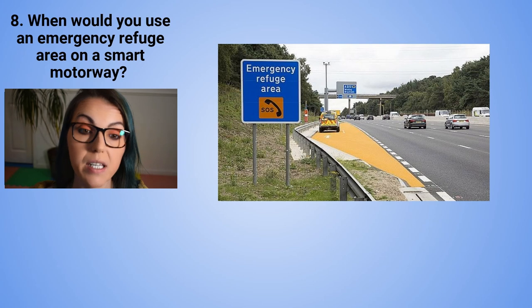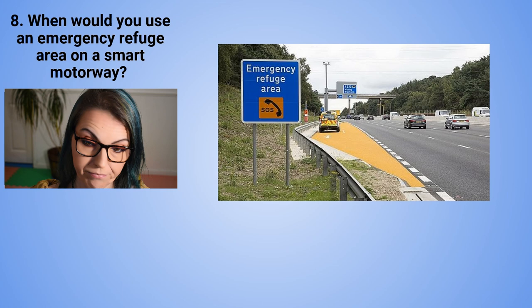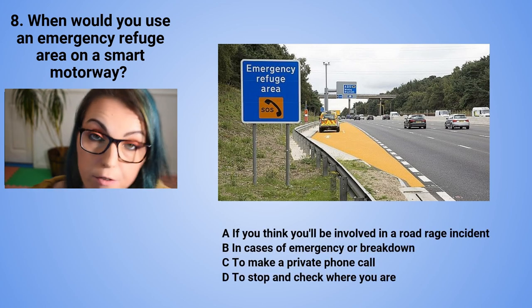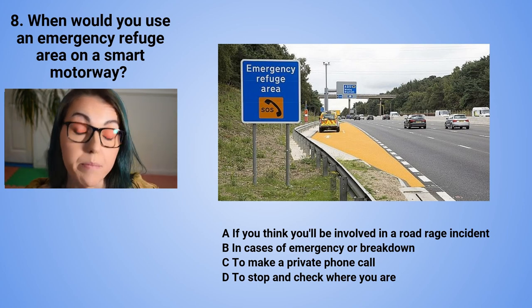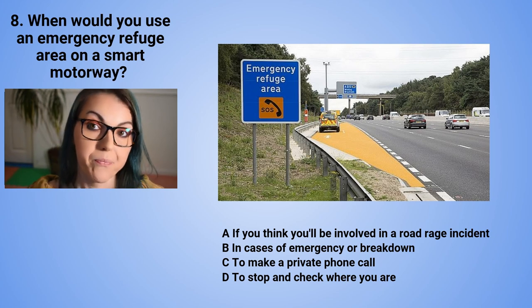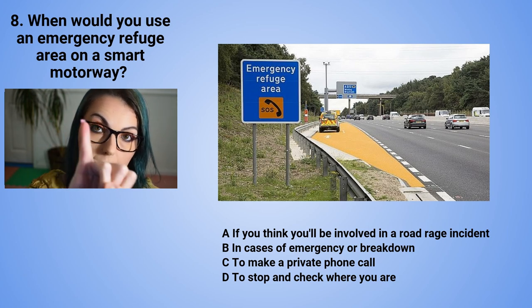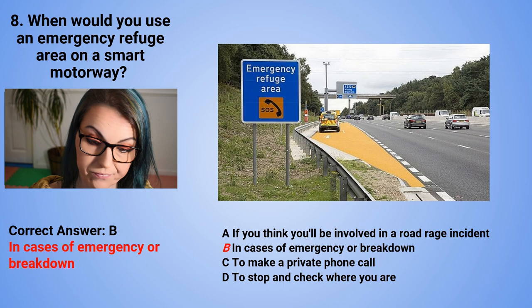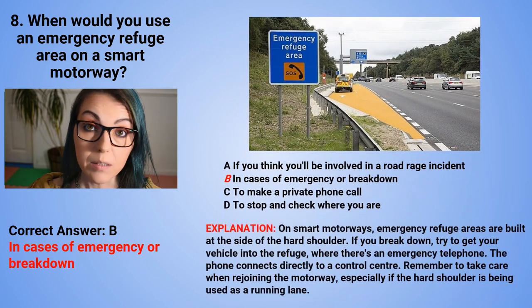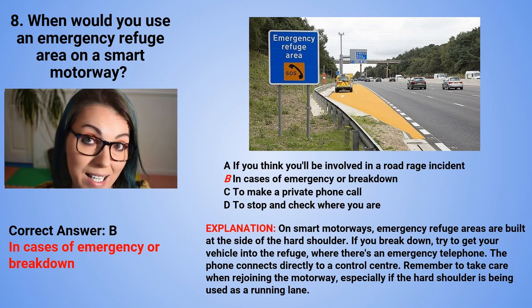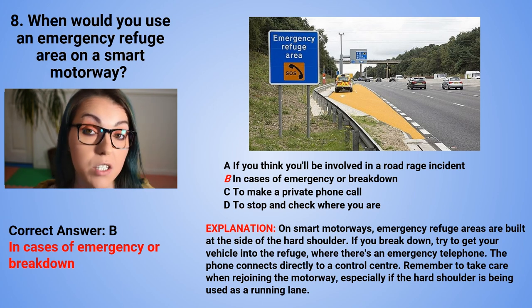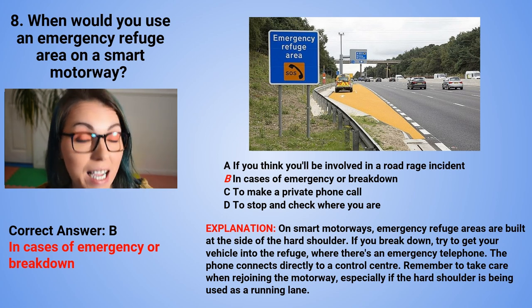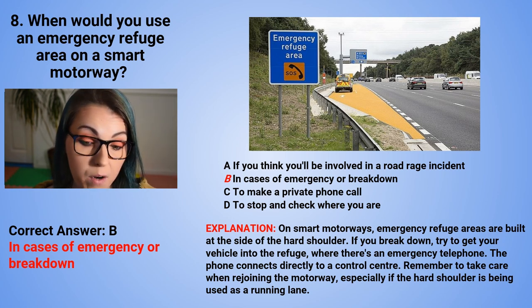Question 8: When would you use an emergency refuge area on a smart motorway? A. If you think you will be involved in a road rage incident. B. In case of emergency or breakdown. C. To make a private phone call. Or D. To stop and check where you are. The correct answer is B — in case of emergency or breakdown. Emergency refuge areas are built at the side of the hard shoulder. If you break down, try to get your vehicle into the refuge area where there is an emergency phone that connects directly to a control centre. Take care when rejoining the motorway, especially if the hard shoulder is being used as a running lane.